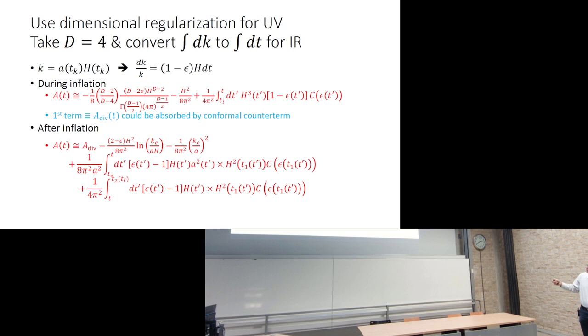Then you just use dimensional regularization to write the result for the ultraviolet part of the mode sum. Take D equals four and convert integral DK to DT for the infrared parts. You do that using the definition of horizon crossing. K is equal to AH. So DK over K is one minus epsilon H. That will convert from DK to T. The result during inflation is this. This is an analytic approximation which is hugely accurate during inflation. After inflation, there's three regions: the ultraviolet, the part between first and second crossing, and then the part which is still not undergone second crossing. I will just now give you my conclusions.